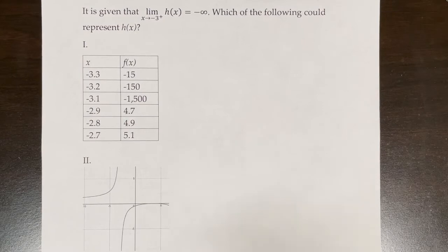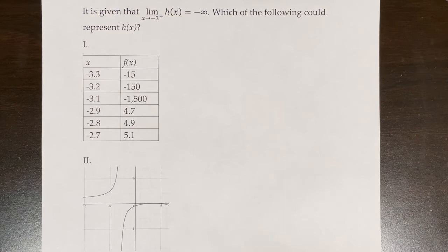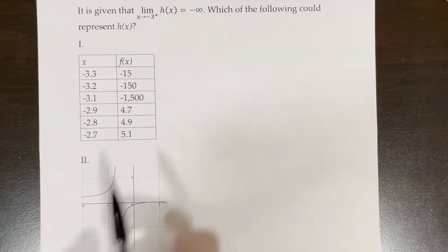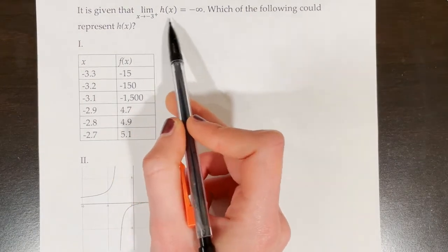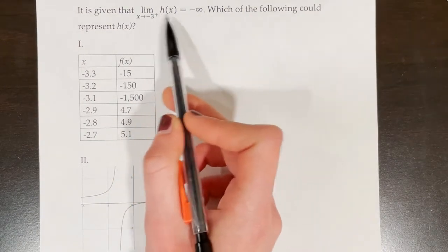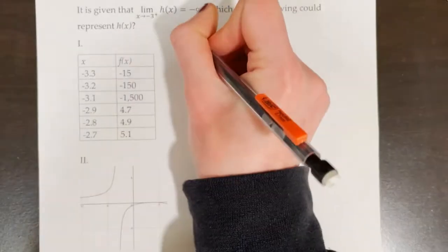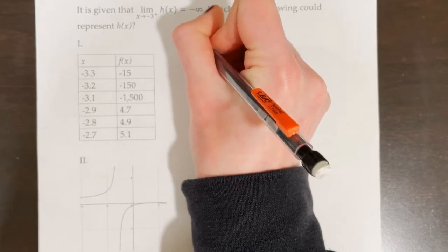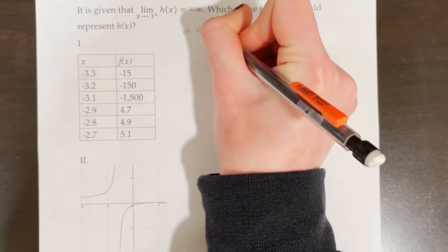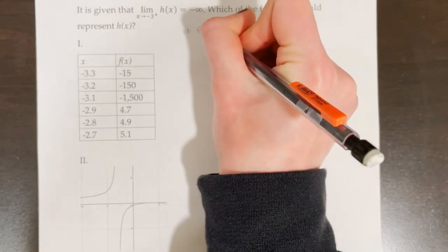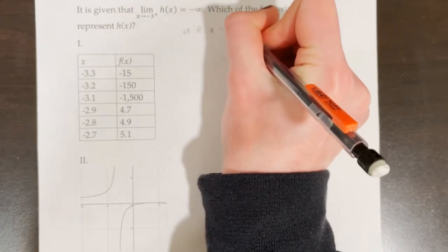It is given that the limit of h(x) as x approaches −3 from the right equals negative infinity. We need to determine which function could represent h(x). Another way to think about this is that there is a vertical asymptote at x = −3.